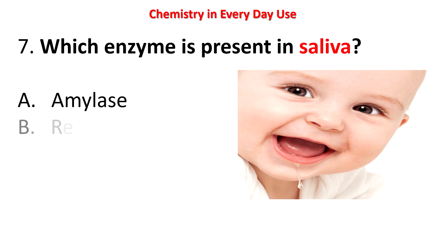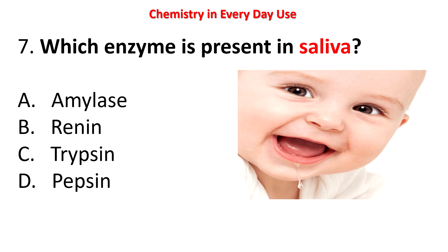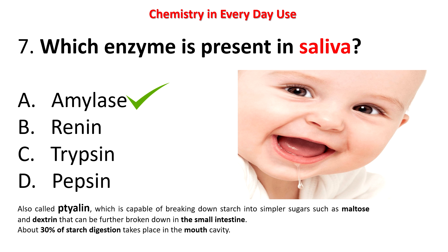Next question: which enzyme is present in saliva? Options: amylase, trypsin, pepsin. The answer is amylase, also called ptyalin. It is capable of breaking down starch into simple sugars such as maltose and dextrin, which can be further broken down in the small intestine. About 30 percent of starch digestion takes place in the mouth cavity.